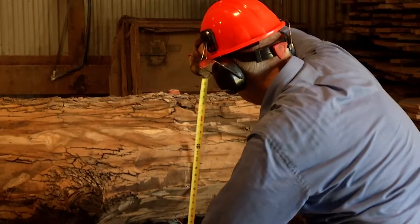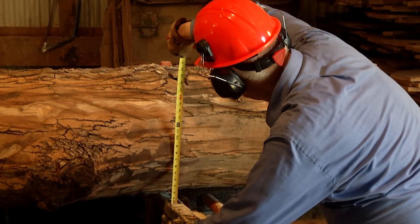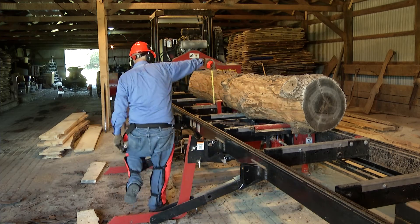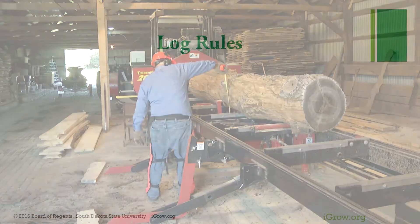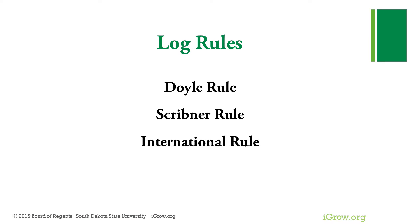A log rule depends upon two variables: the diameter at the smaller end of the log and the length of the log. There are three common log rules used in our region: Doyle, Scribner, and International.